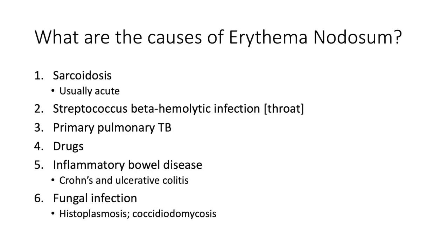What are the causes of erythema nodosum? One is sarcoidosis, which is usually acute. Watch out for Löfgren syndrome, which is a triad of peripheral arthritis together with erythema nodosum and bilateral hilar adenopathy.